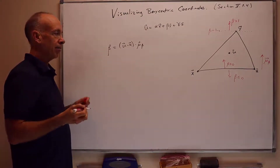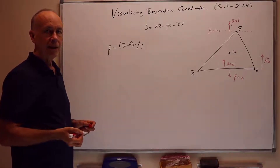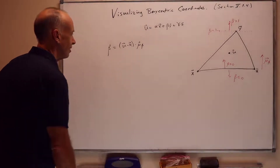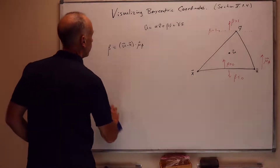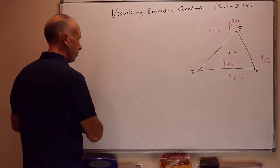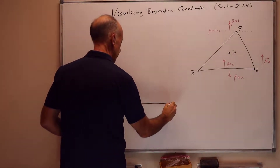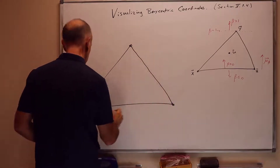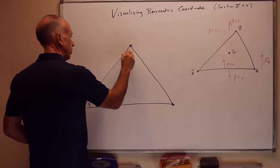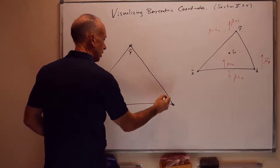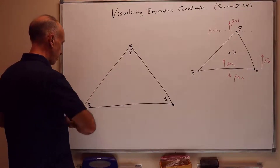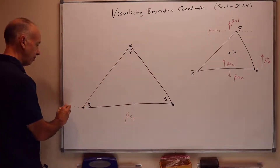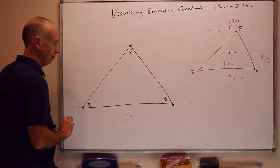This worked for beta, and in the same way we can do the same type of analysis for alpha and gamma. So let's draw this again. Here are our points x, y, and z. For things below the line through x and z, we have beta is less than or equal to zero — that's anything below the line containing x and z.